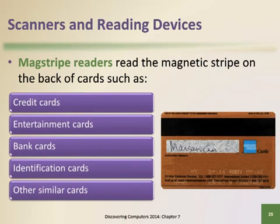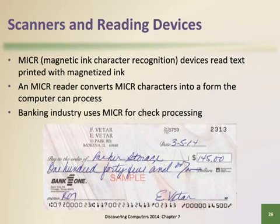The back of cards contains information identifying the card user and other related information, which is read by MagStripe readers. Magnetic ink character recognition devices read text printed with magnetized ink. The banking industry almost exclusively uses magnetic ink character recognition for check processing.